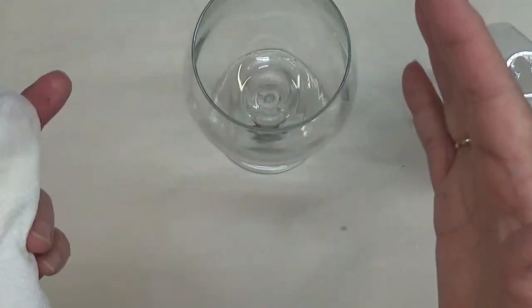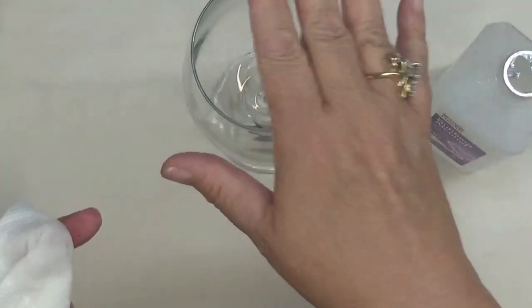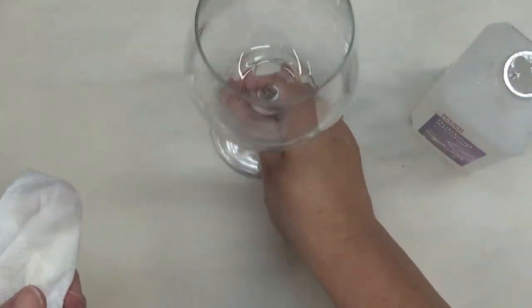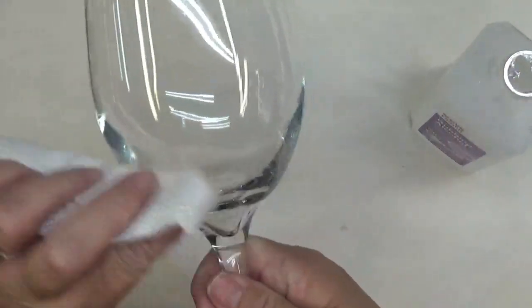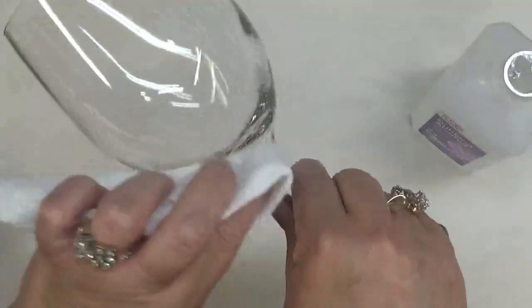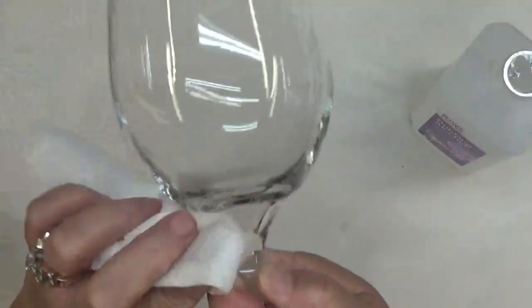Basically, all you do is wash your glass with soap and water, or if you choose, just cover it with rubbing alcohol and clean it off that way.